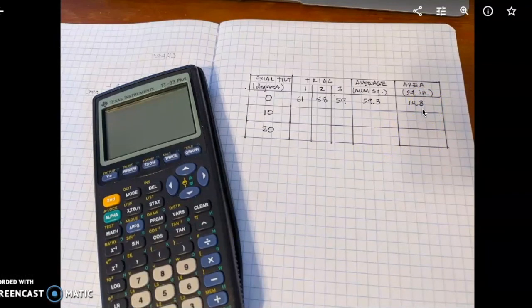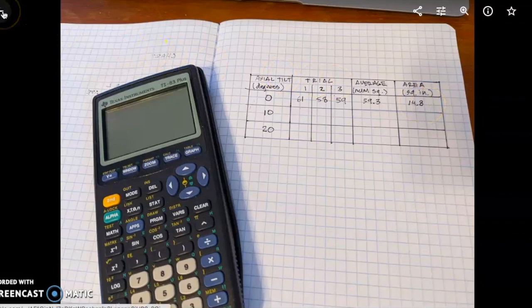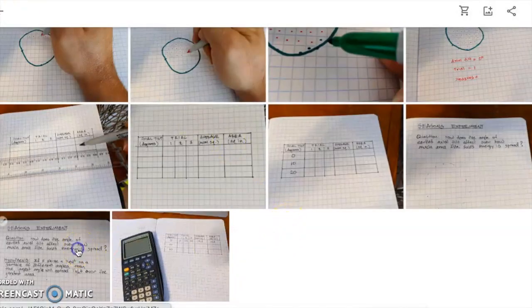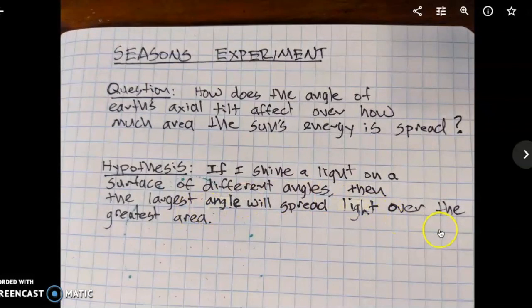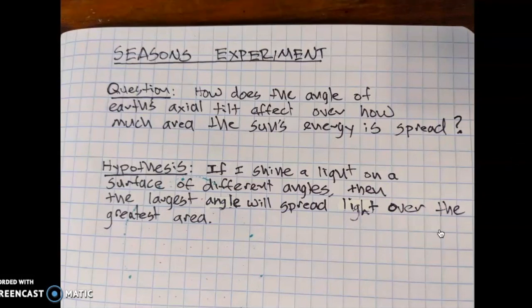Now when you have this table, you can maybe - if my hypothesis was correct - this number here with the axial tilt of 20 degrees would be greater than this number here, 14.8. I'm gonna let you guys decide, and I really need your help to decide if my hypothesis can be supported or refuted. Again, here's the hypothesis: If I shine a light on a surface at different angles, then the largest angle will spread light over the greatest area. This will help me answer the question: How does the angle of the Earth's axial tilt affect over how much area the sun's energy is spread?